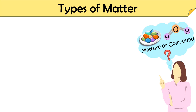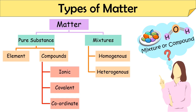Everything around us is made up of matter. Matter is any substance that has mass and occupies space. Broadly, we can divide matter into two categories: pure substances and mixtures. The pure substances can again be divided as elements and compounds.